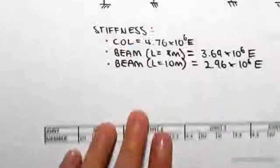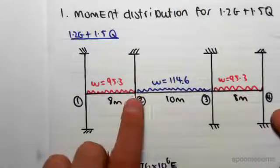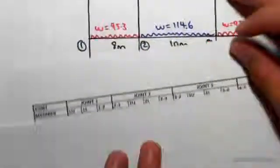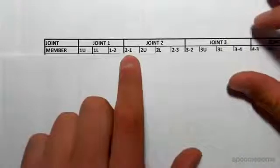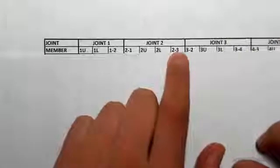Now at joint two we have the beam going from two to one, we have the beam going from two to three, and we have the column upper and the column lower. So just like that, we have the beam going from two to one, column upper, column lower, two upper, two lower, and the beam going from two to three.